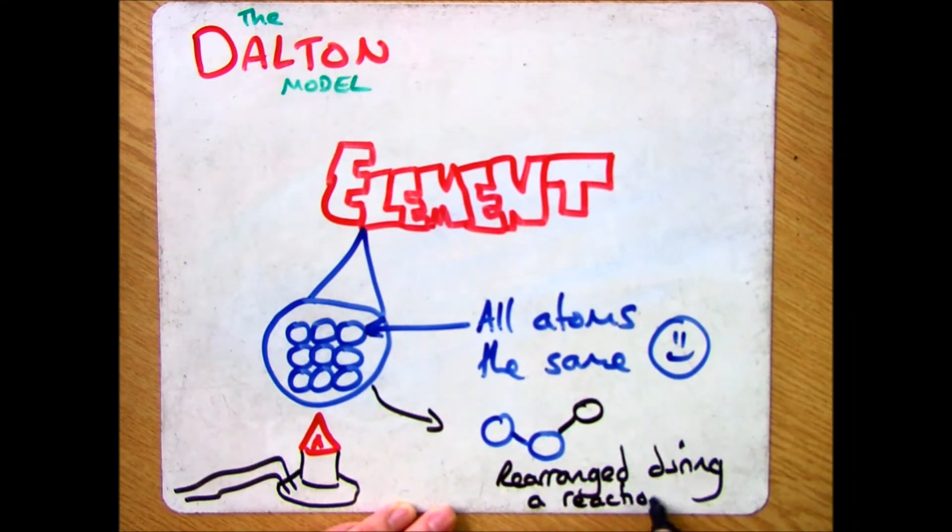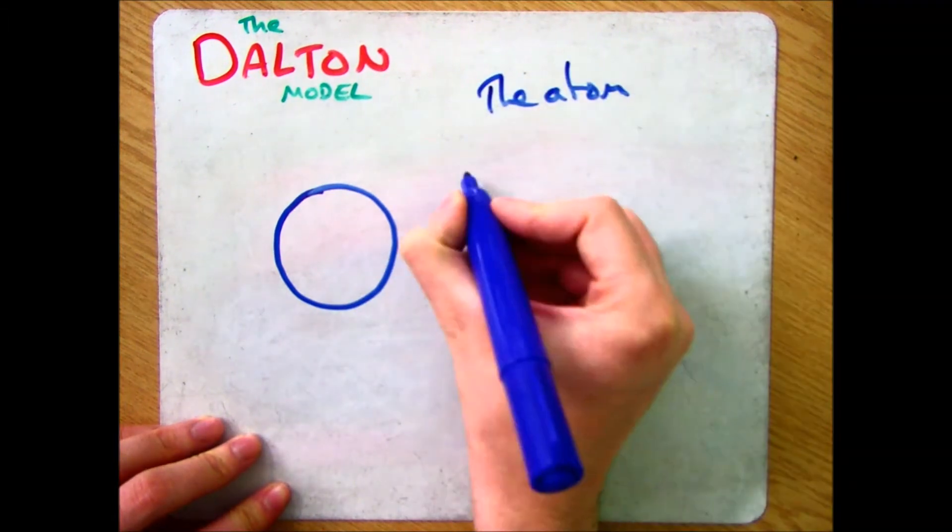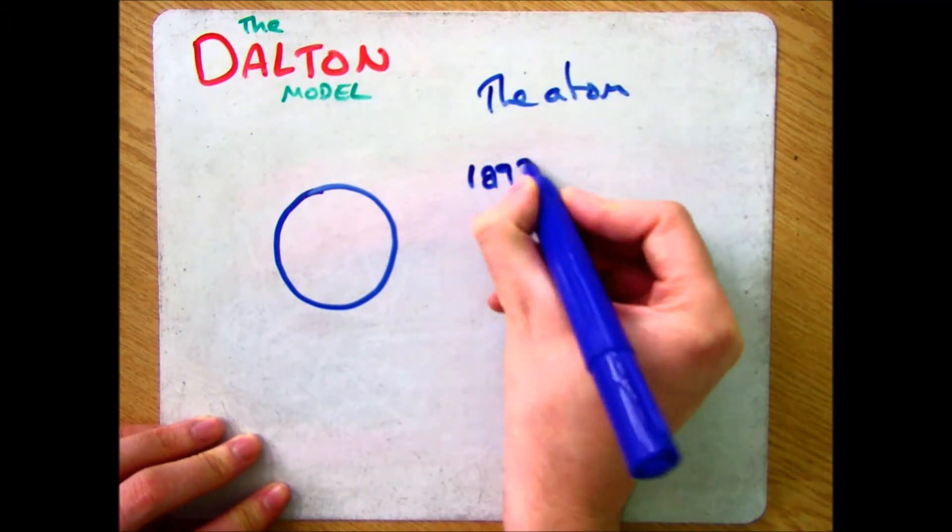This is a chemical reaction. Dalton's theories took a while to be accepted because it's difficult to see the atom so it's difficult to prove it. And when it was proved, there were some things that were incorrect.